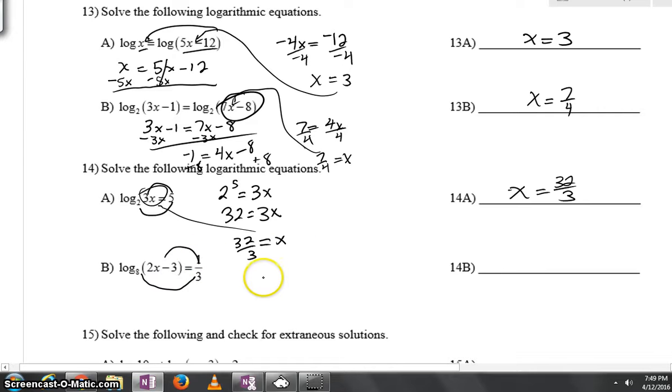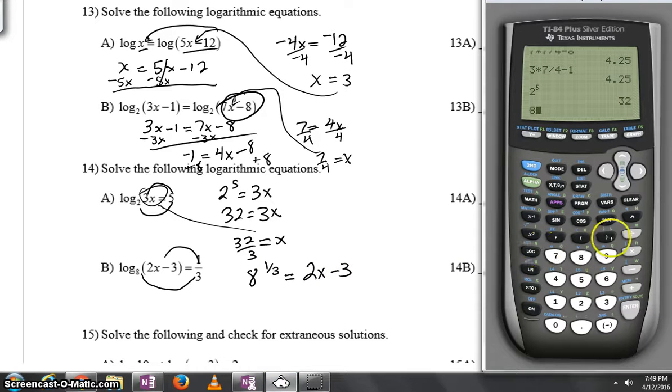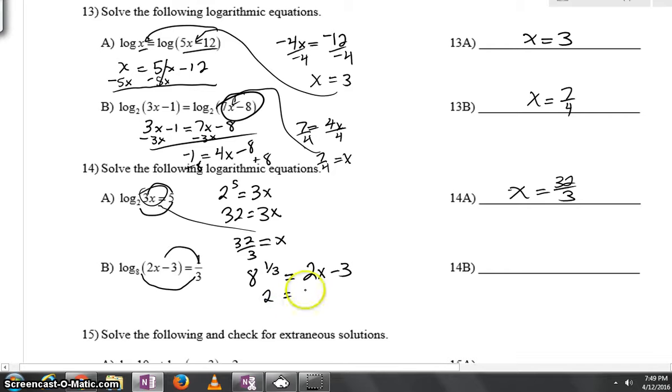Do a log circle here for number 14, we'll have 8 to the 1 3rd is equal to 2x minus 3. Now 8 to the 1 3rd you could work that out, you might remember it's really the cube root of 8 which is going to be a 2. I'll add a 3 to both sides, 2 plus 3 is 5, we can divide by 2 and x will be 5 halves or if you'd rather 2.5.